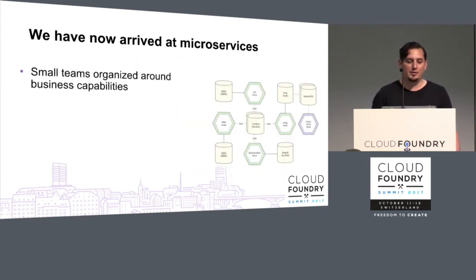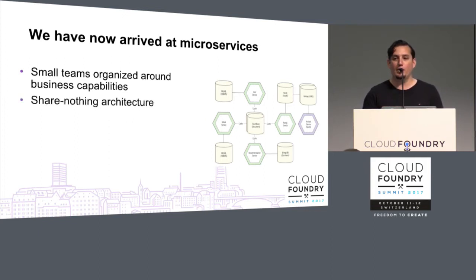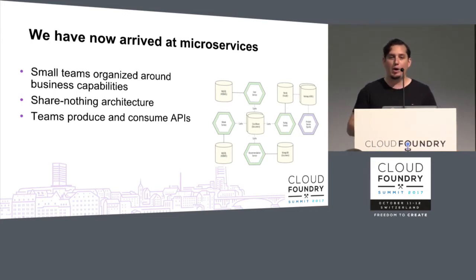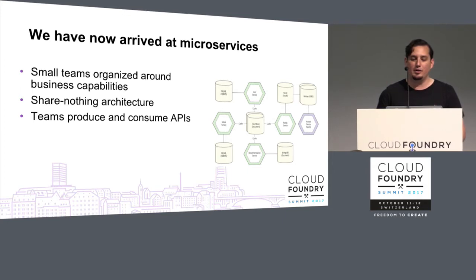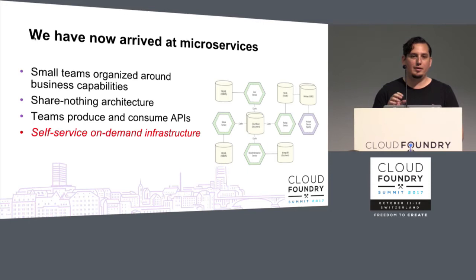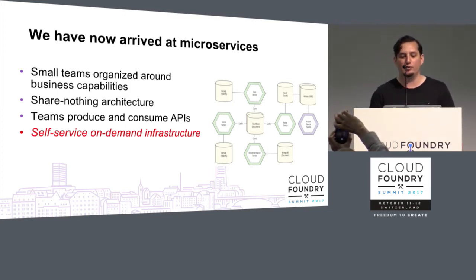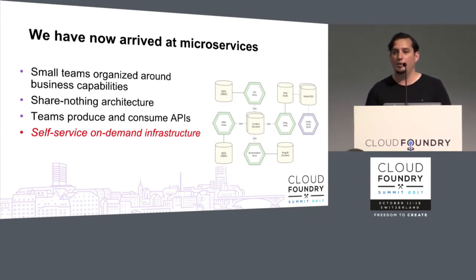Now we've arrived at microservices. The idea is that small teams are organized around business capabilities. The key idea really is velocity and not sharing anything — we're going to move to a share-nothing architecture. We're not going to share our libraries either. What we're going to do is create an economy of applications that produce APIs and consume APIs. We'll have many small services organized around business capabilities and they'll expose their functionality to the rest of the applications via REST API. These teams need to be able to build and run their applications with self-service on-demand infrastructure.